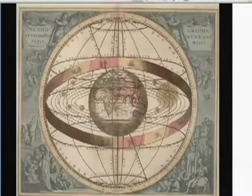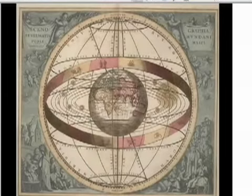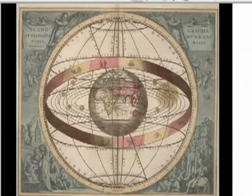Their technology of astronomy and astrology was based on a geocentric conception. Geocentric means centered on the Earth. As you can see in this drawing, the Earth is at the center.